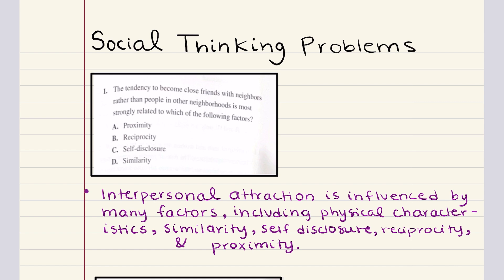Problem number one says the tendency to become close friends with neighbors rather than people in other neighborhoods is most strongly related to which of the following factors. Now in lecture we talked about interpersonal attraction as what makes people like each other and we said that it's influenced by multiple factors from physical characteristics to similarity to self-disclosure and reciprocity as well as proximity. Now if we look at the answer choices, all four answer choices are things that influence social attraction.